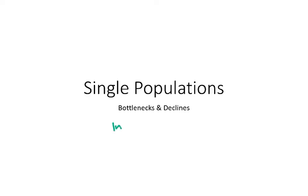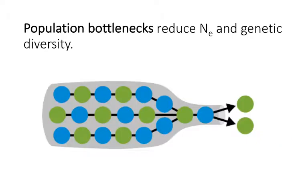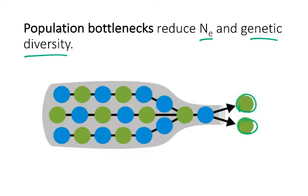We will continue our discussion of what influences genetic diversity, focusing on bottlenecks. The overall effect of a bottleneck is to reduce effective population size and also genetic diversity. In this image here, we have some kind of population that for whatever reason has a chokehold where only a few individuals are able to survive. If only those green individuals survive, we've not only reduced the overall effective population size, but also the genetic diversity — we've lost that blue allele.